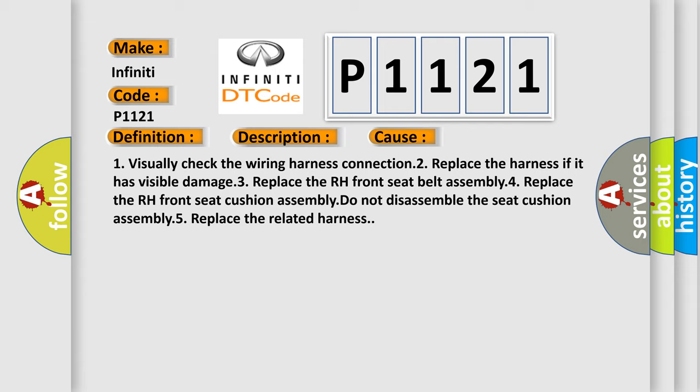One, visually check the wiring harness connection. Two, replace the harness if it has visible damage. Three, replace the RH front seat belt assembly. Four, replace the RH front seat cushion assembly. Do not disassemble the seat cushion assembly. Five, replace the related harness.